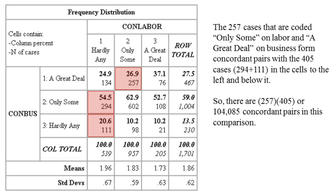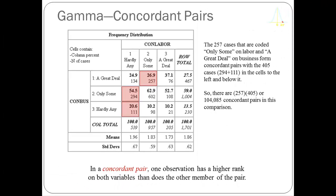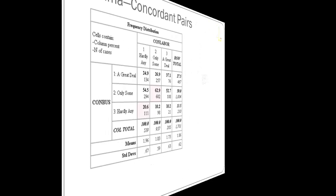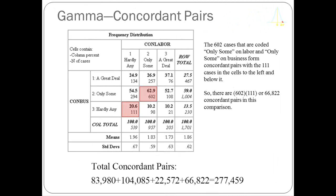Moving to the people who have hardly any confidence in labor and a great deal of confidence in business, there are no concordant pairs — nobody is below and to the left. Moving down a row back to the right, we have 108 people with a great deal of confidence in labor but only some confidence in business, yielding 22,572 concordant pairs. Working through the remaining cell — only some confidence in both — gives us one more comparison. Summing all concordant pairs gives a total of 277,459.